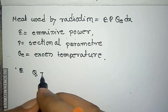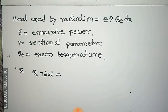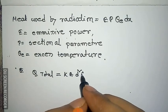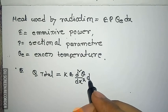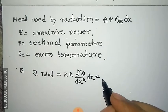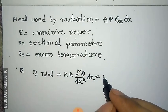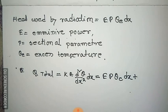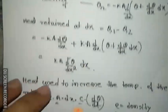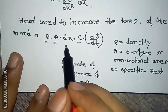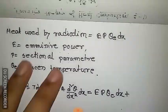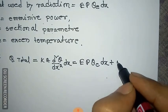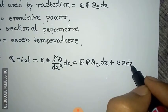Now the total heat equation is: k (d² theta / dx²) dx equals the heat used in radiation plus the heat used to increase the temperature of the rod, which is rho A dx c (d theta / dt). We write and combine these terms.